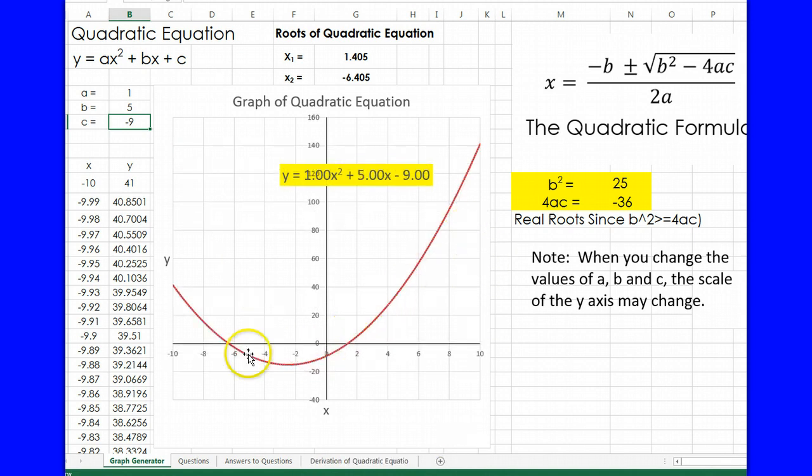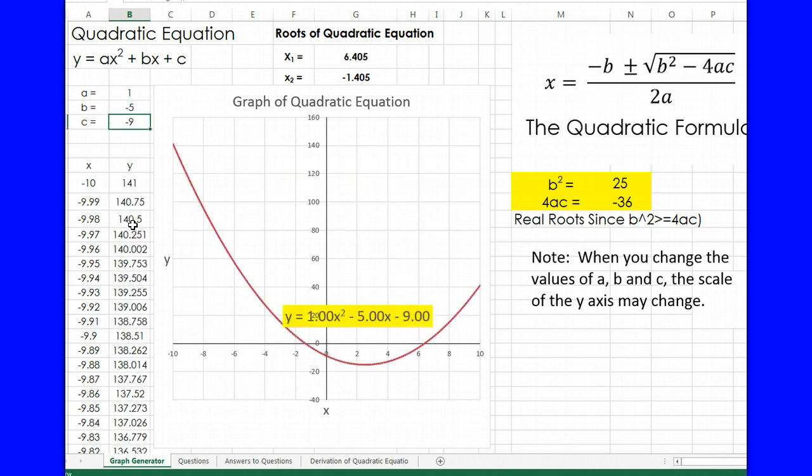You can see the curve becomes less symmetric—it's no longer symmetric with respect to the y-axis. It shifts down on the left and up on the right. And now, instead of putting 5x, I'm going to put minus 5x. You can see it shifts the other way.